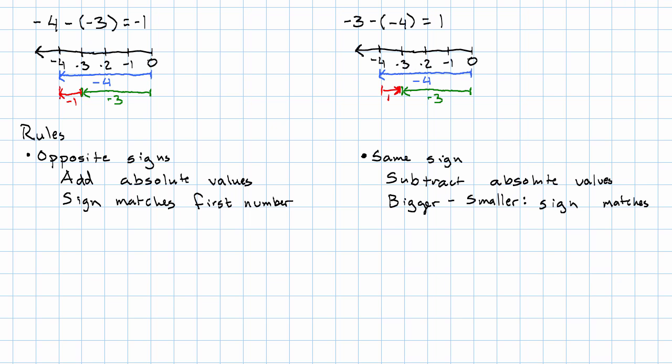So if we have bigger absolute value minus smaller absolute value, the sign matches the numbers we're subtracting. If it's the other way around, if we have a smaller number minus the bigger number, then the sign swaps.